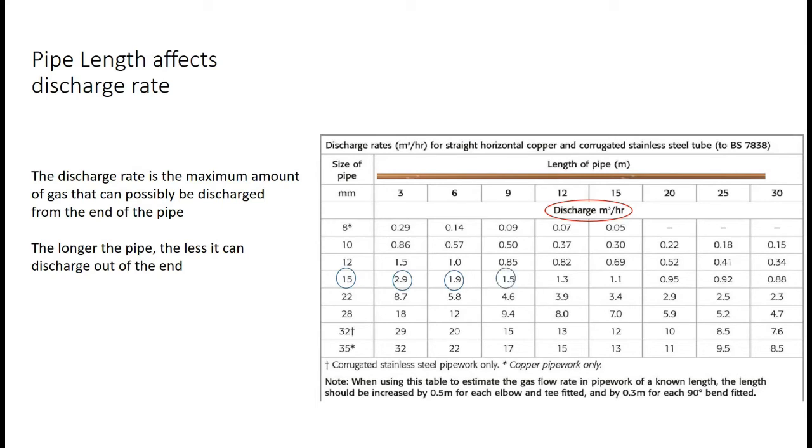If you make it longer to 9 metres, it goes down to 1.5, then 12 metres 1.3 and 15 metres 1.1. So the longer the pipe is, the less gas can be passed through it.